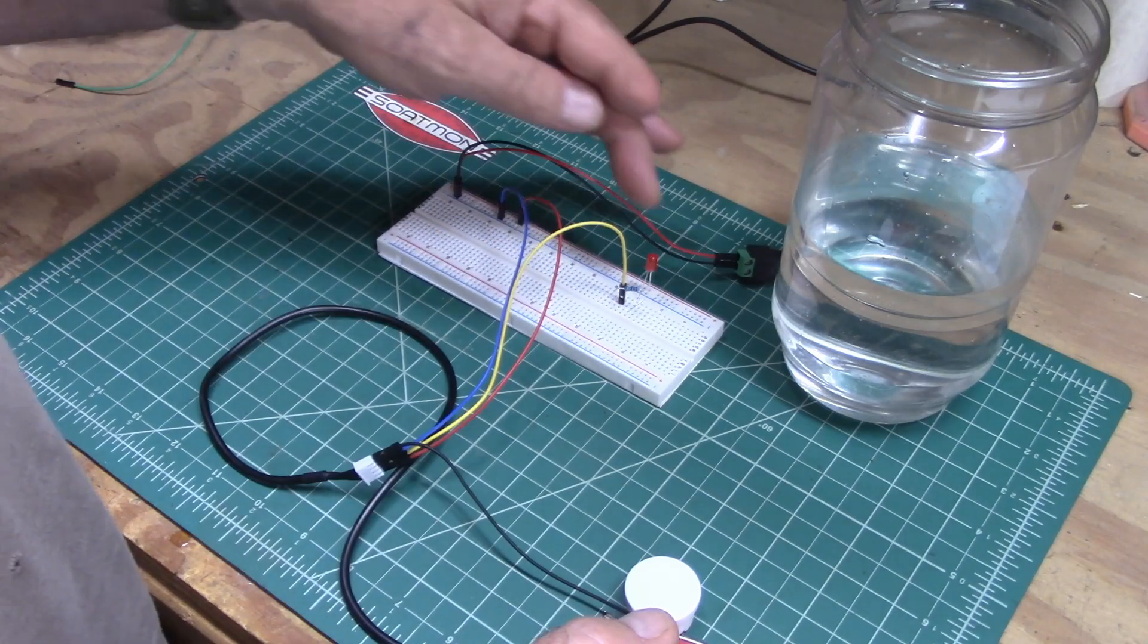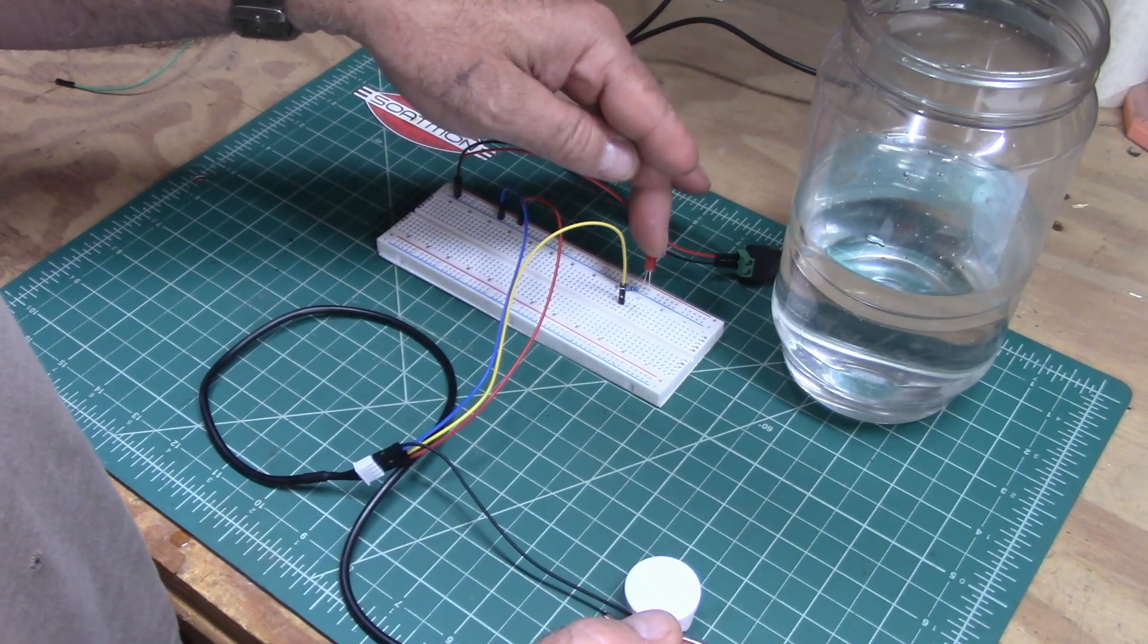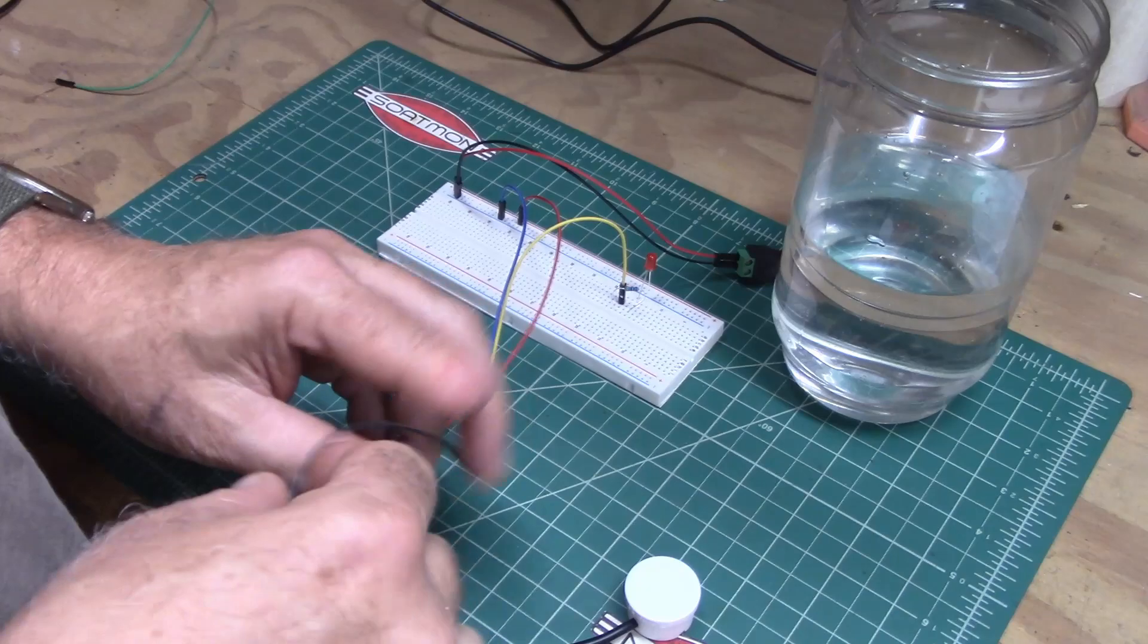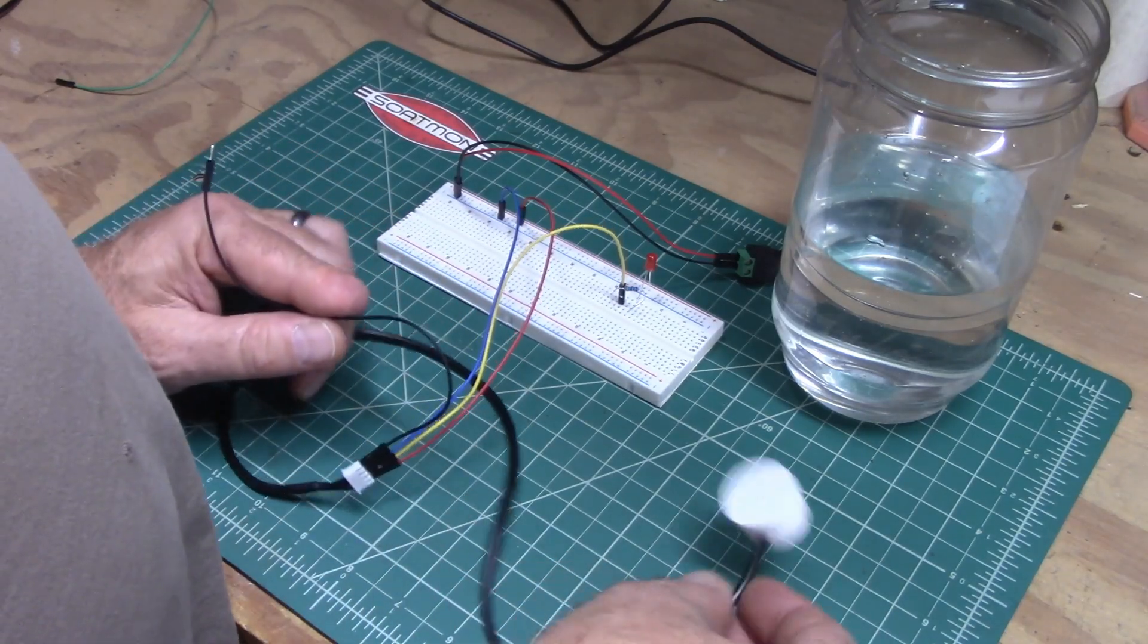Alright, so in this case we're having an output to a red flashing LED to show us whether it's detecting water or not.